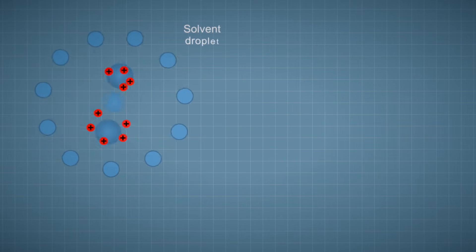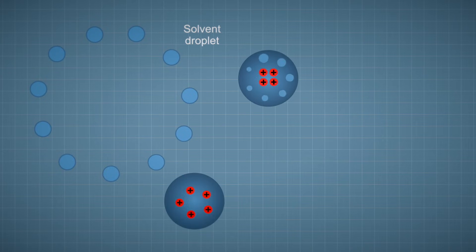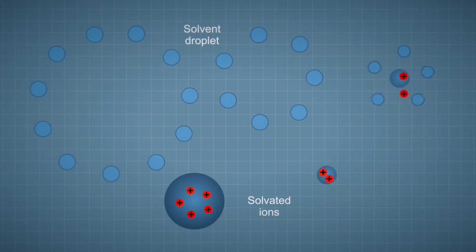Or the charged residue model, or CRM, where ions eventually become desolvated as solvent molecules leave the droplet surface. In this process, solvent molecules evaporate from the larger droplet and the droplet shrinks until just desolvated ions remain.